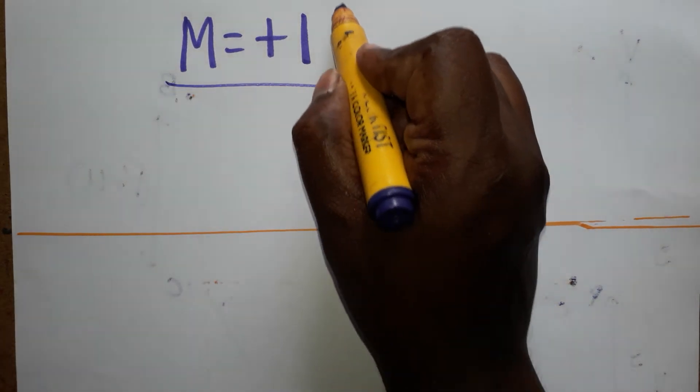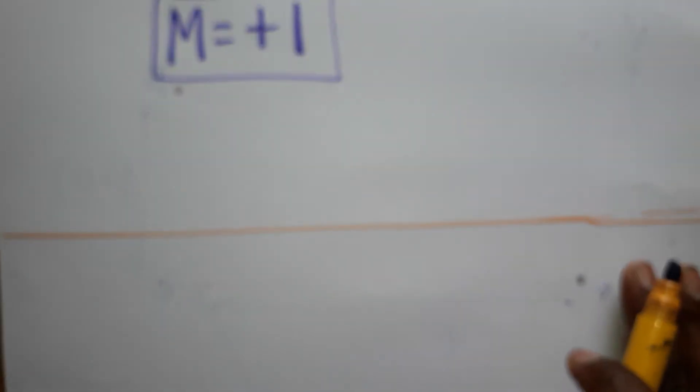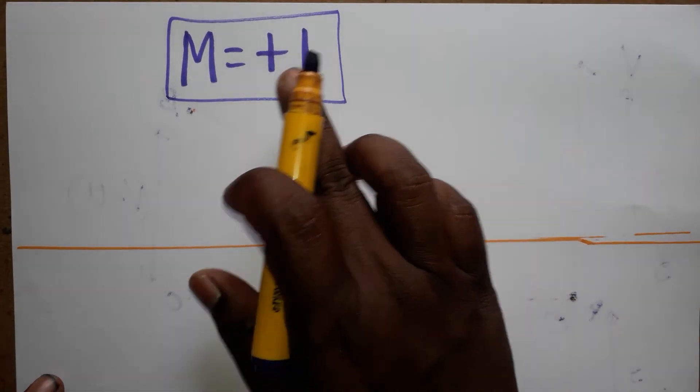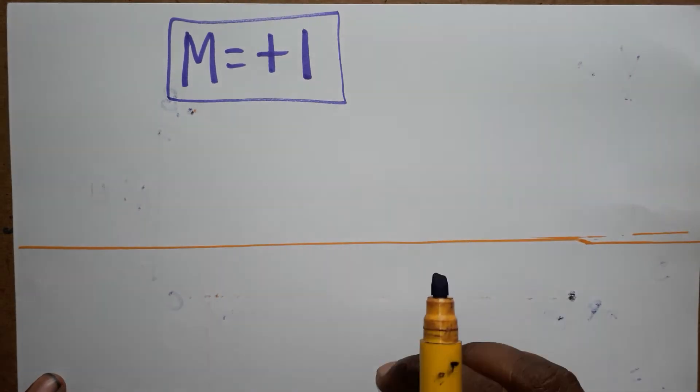Today we are going to learn magnification is equal to plus one. What is this meaning? Which kind of mirror is going to produce plus one magnification? Plus one means upright, one means it's the same size.